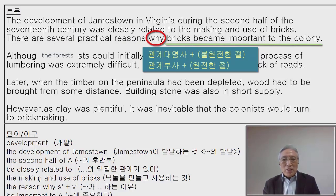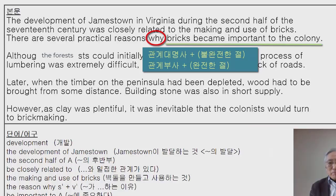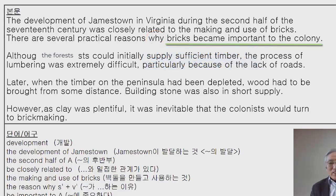'Bricks became important to the colony' — '벽돌이 식민지에게 중요하게 되었다.' 'be important to' 또는 'become important to'로 씁니다. 'colony'는 처음 나오는 경우 'a'가 오는 것이 일반적이나, 문맥상 이야기하고 있는 식민지이므로 'the'를 씁니다.